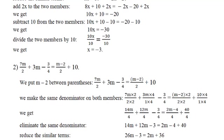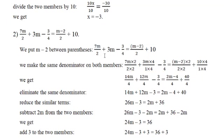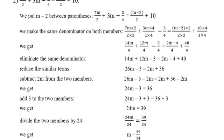The second example: 7m over 2 plus 3m minus 3 over 4 equal m minus 2. We use 4 as a common denominator, multiplying each term accordingly. We get 14m over 4 plus 12m over 4 minus 3 over 4 equal to 2m minus 4 over 4.